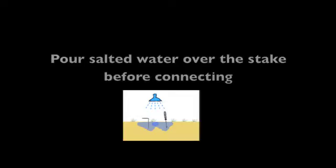To improve the ground connection, you can try these strategies. Ensure the connection point on the stake is not rusted. Embed a longer stake deeper into the ground to reach wetter ground. Pour a gallon of salted water over the stake before connecting.